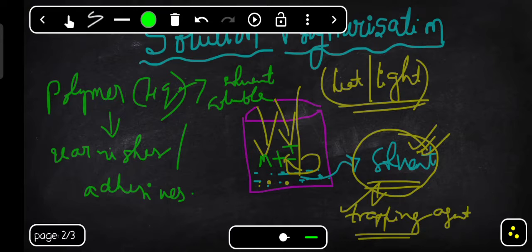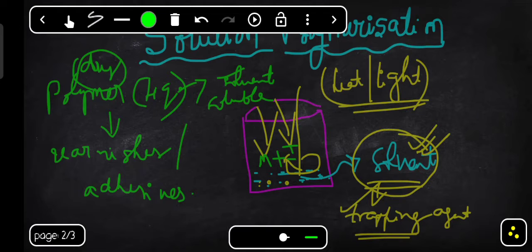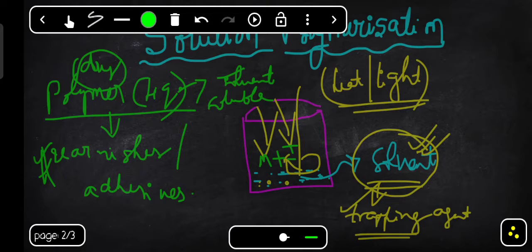If you want to obtain the dry polymer, you need to remove all the solvent, which is very difficult by this method. An additional task and additional equipment are required to remove the solvent. It is not easy to get the dry polymer by this method, but the polymer obtained in the liquid state can be used directly.